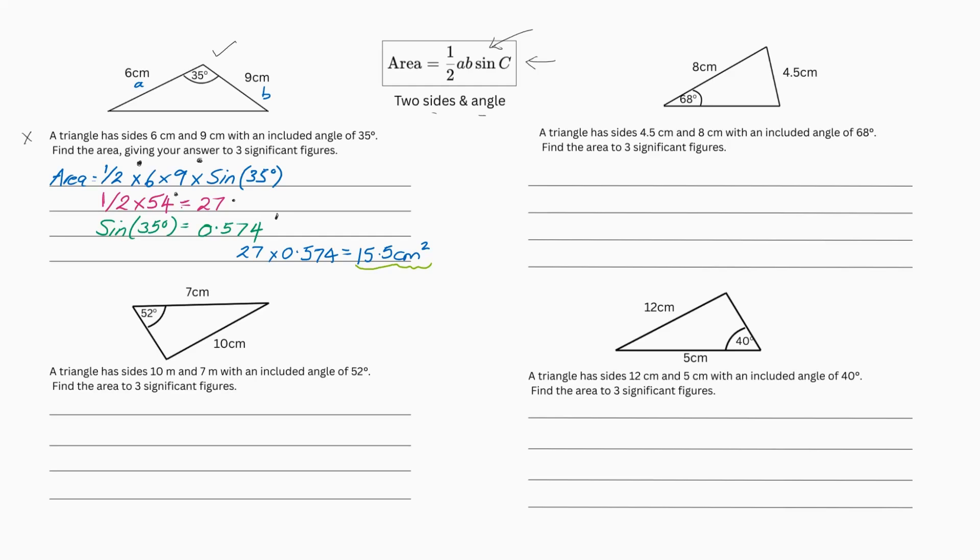So I always encourage you to do your method for method marks purely because what if instead of putting 6 times 9 in the calculator, you did 6 times 5? Your answer is going to be wrong. And the person marking it isn't going to understand how you got the answer. So if you put some method down and break it up like I just did, you get method marks. I can't stress how much method marks are used for getting those extra points in exams.